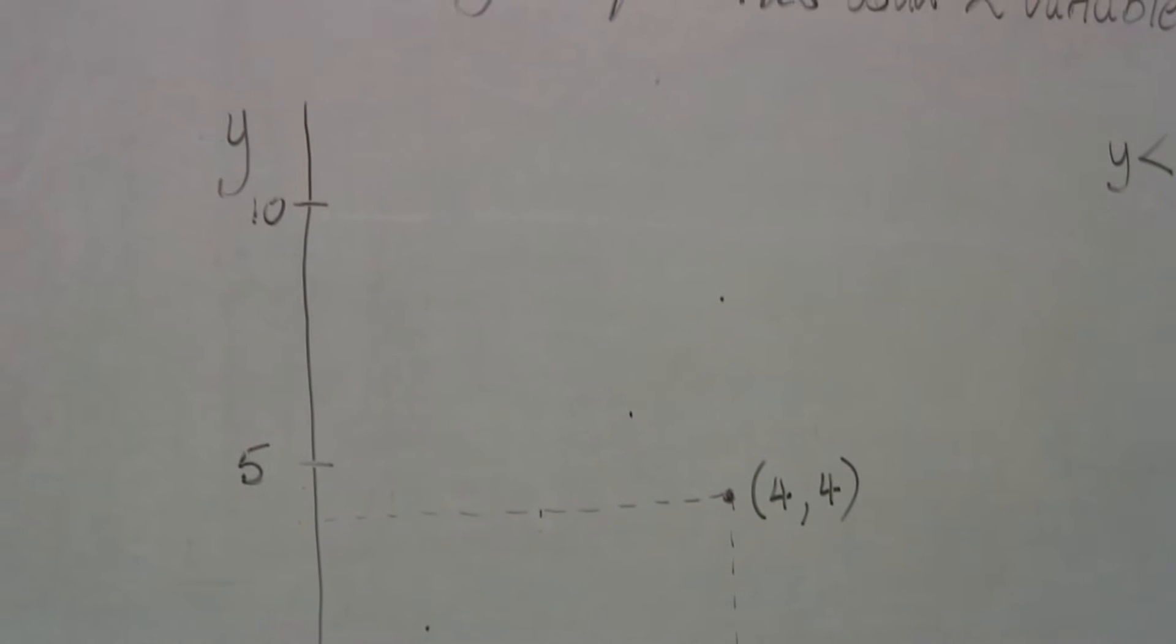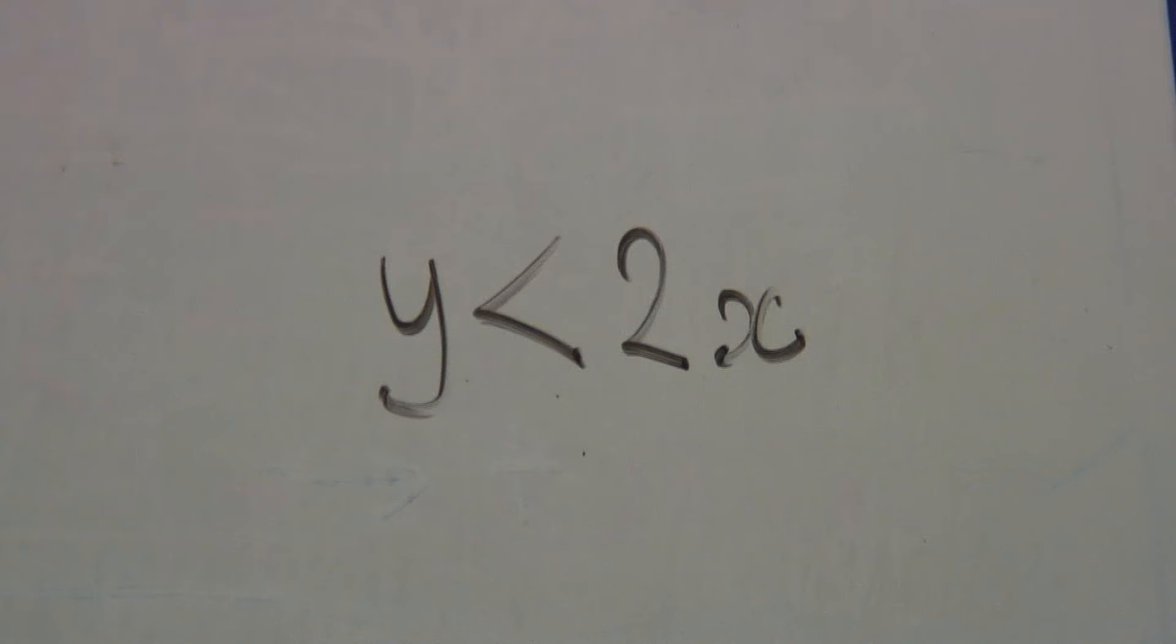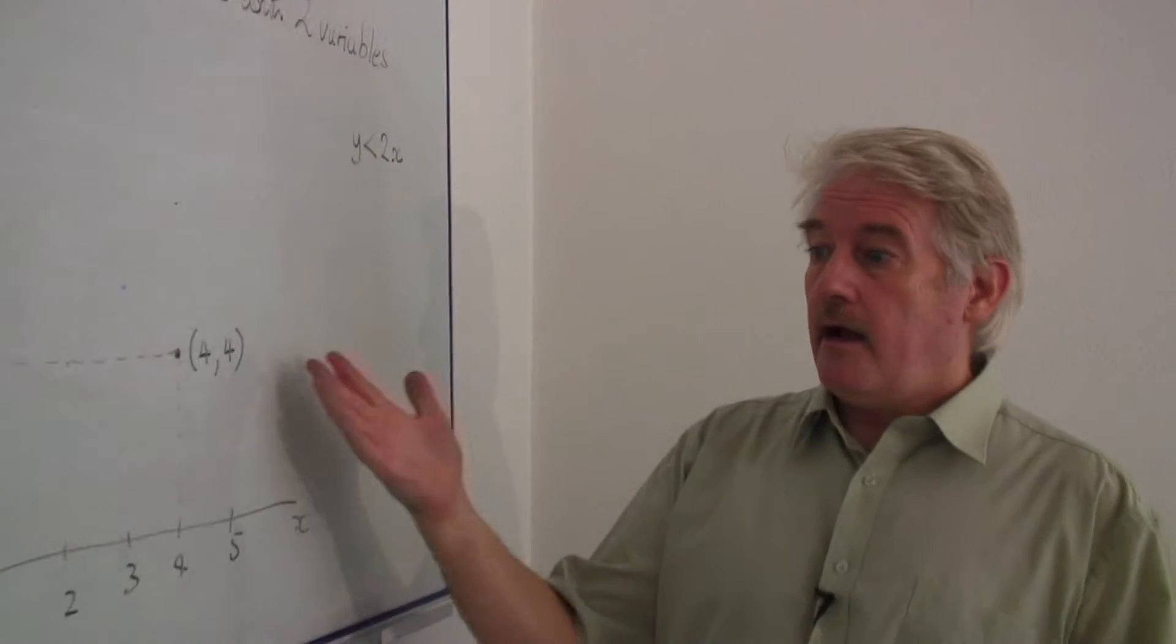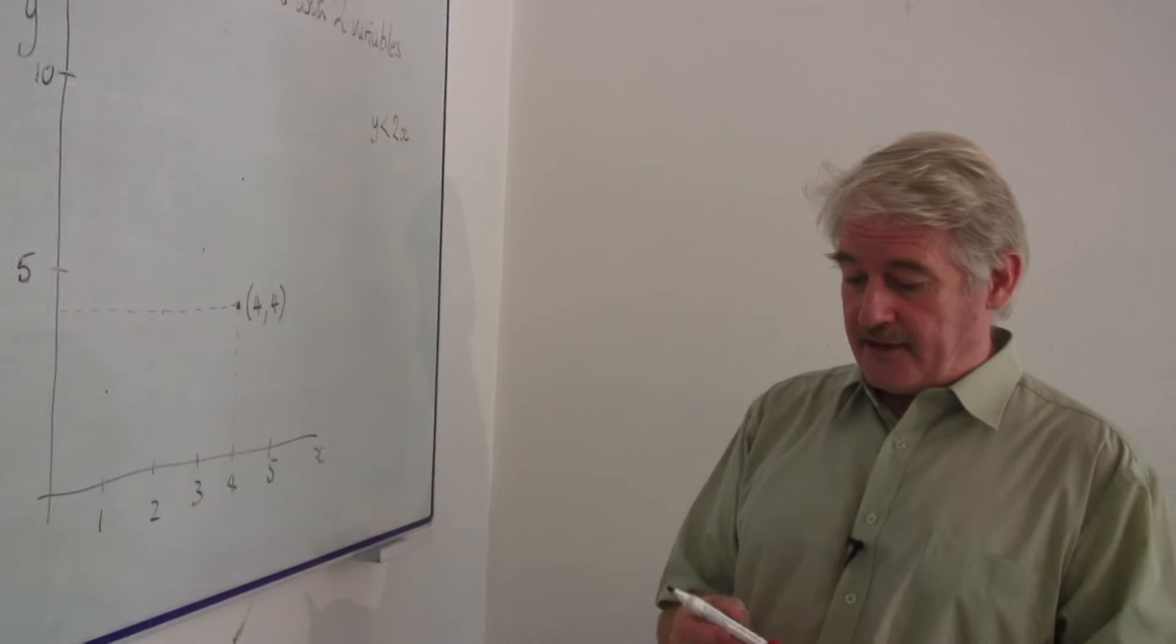Now I'm going to look at this inequality. It's a simple inequality: y is less than two x. It's an inequality with two variables, y is less than two x. So how do we actually plot that on the graph?